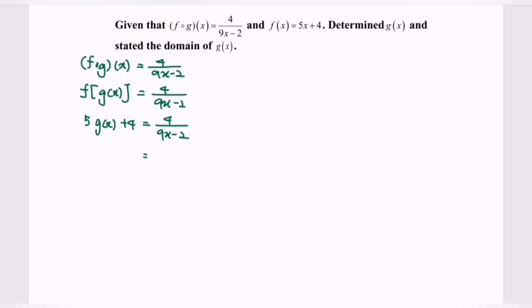Rearrange the equation where we will have 4/(9x-2) minus 4. Next we are going to combine over a common denominator where we will have [4 - 4(9x-2)]/(9x-2). Expand the equation. So we will have (4 - 36x + 8)/(9x-2). Next we will have 5g(x) equals to (-36x + 12)/(9x-2).